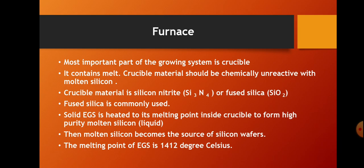The most important part of the growing system is the crucible, which contains the melt. The crucible material should be chemically unreactive with molten silicon. The material is silicon nitride or fused silica, with fused silica being commonly used. Solid electronic grade silicon is heated to its melting point of 1412 degrees Celsius inside the crucible to form high purity molten silicon.